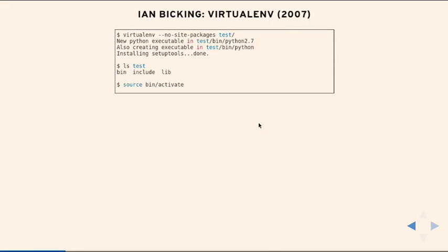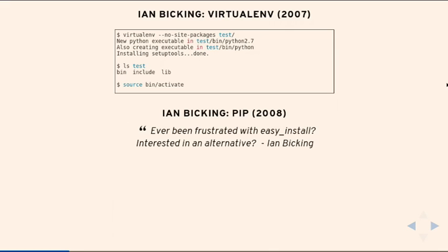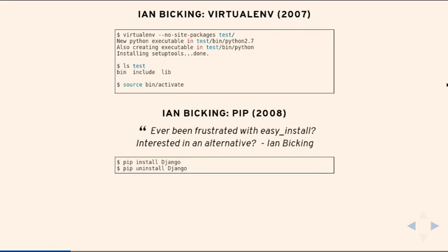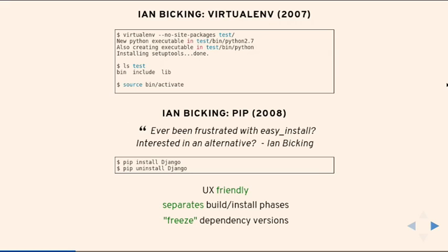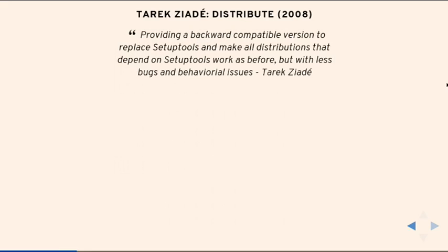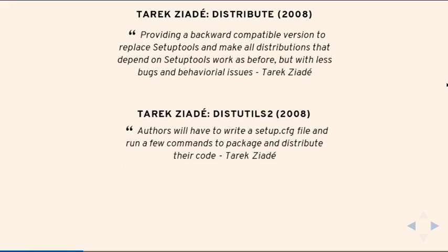In 2007, Ian Bicking — who now works for Mozilla — wrote virtualenv, which is kind of like nix-shell for Python. It symlinks Python into an isolated folder so you can install packages in isolation. He also wrote pip, which is a fork of easy_install. That was a really nice move because you want the installer software separated from the build tooling. Pip has a nicer interface, build phases, can freeze versions of dependencies, and so on. Then Tarek Ziad in 2008 — who also works for Mozilla — said we have to fix this, and after lots of politics he forked setuptools and wrote distribute, trying to document and improve the codebase.